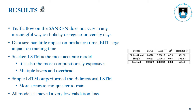Our results indicate that traffic flow on SAMRAN does not vary in any meaningful way on holidays, weekends, or regular university days. The data size had little impact on prediction times, but increasing the dataset had a large impact on training time. The stacked LSTM is the most accurate model, as seen in the table on the right, with the lowest test MAE and MSE and the highest test R-squared. However, the multiple layers added significant overhead and it was the most computationally expensive LSTM, with a training time of just under 10 minutes. The simple LSTM outperformed the bidirectional LSTM — it was more accurate and quicker to train. All models achieved a very low validation loss.